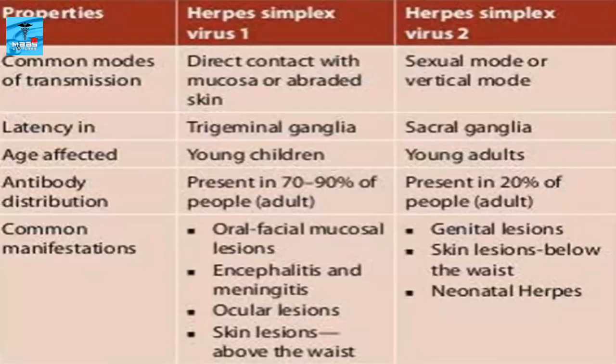The differences between HSV1 and HSV2 are as follows. For HSV1, the common mode of transmission is direct contact with the mucosa or abraded skin, whereas for HSV2, sexual, motor, and vertical modes are common. For HSV1, latency occurs in the trigeminal ganglia, whereas for HSV2, latency occurs in the sacral ganglia. HSV1 usually affects young children, whereas HSV2 usually affects young adults.